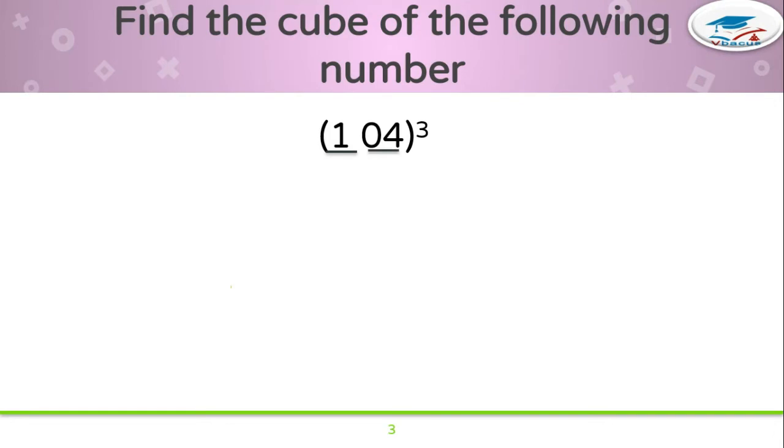Find the cube of the following number, that is 104. First of all, you have to divide this number into two parts: first part is 1, second part is 04. After that, you insert four dashes. On the first dash, you have to write the cube of 1. Cube of 1 is 1. On the fourth dash, you have to write the cube of 4, that is 64.